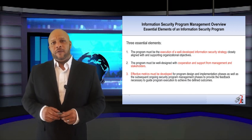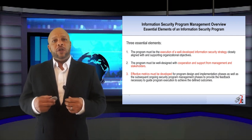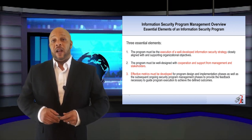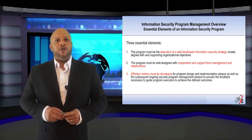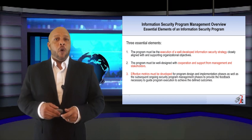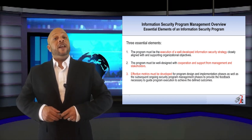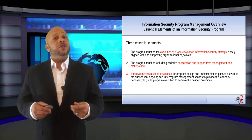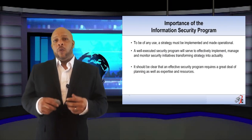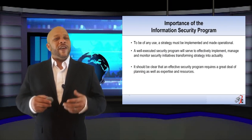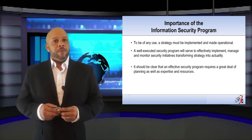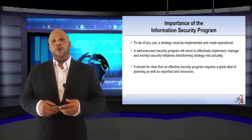If we take a step back and look at the information security program as a whole, we should find three essential elements. The program must be the execution of a well-developed information security strategy. The program should be well-designed with cooperation and support from management and stakeholders. And it must have well-thought-out, well-developed, understood metrics so we can identify our successes and failures throughout the program.